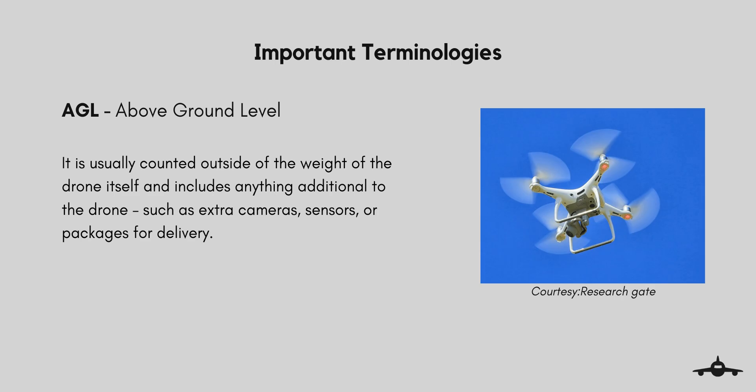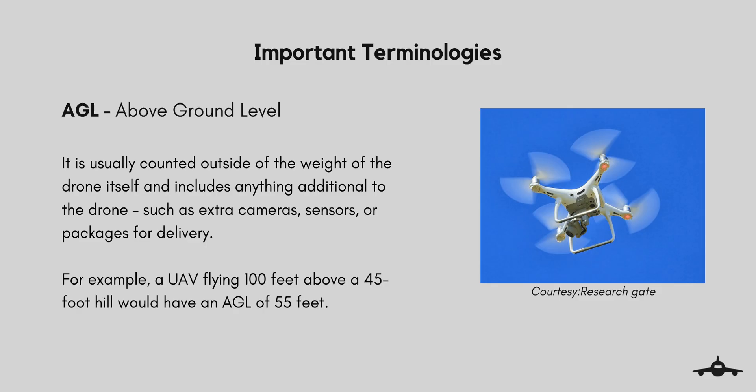AGL stands for Above Ground Level. It refers to the altitude above the ground immediately under the UAV. In aviation, atmospheric sciences, and broadcasting, a height above ground level is measured with respect to the underlying ground surface — these expressions indicate where the zero level or reference altitude (the vertical datum) is located. For example, a UAV flying 100 feet above a 45-foot hill will have an AGL of 55 feet.